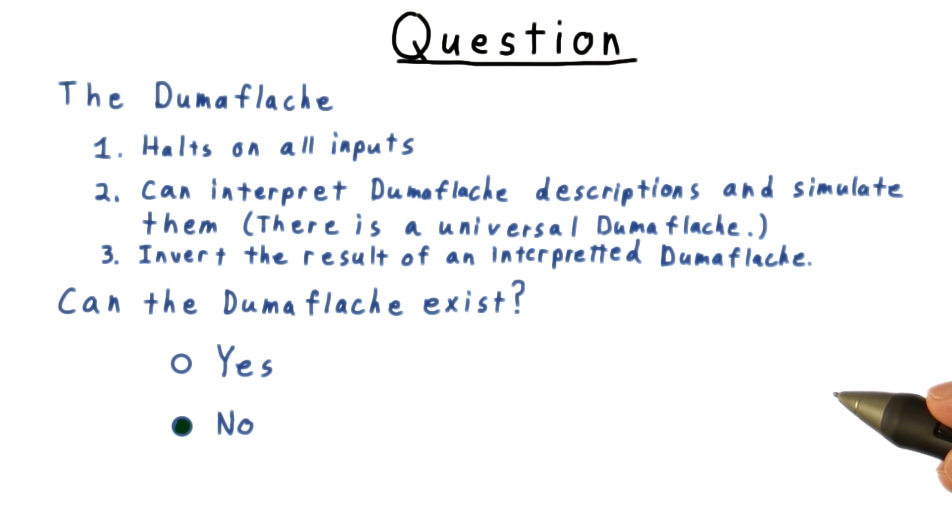Finite state automata and pushdown automata have this property. And it is possible to have models of computation that can interpret their own descriptions and negate the results like Turing machines. But as the diagonalization argument shows, you can't have both.